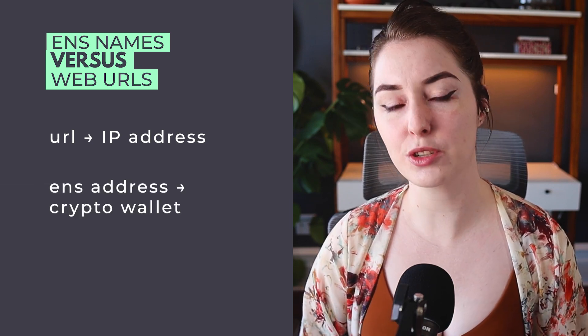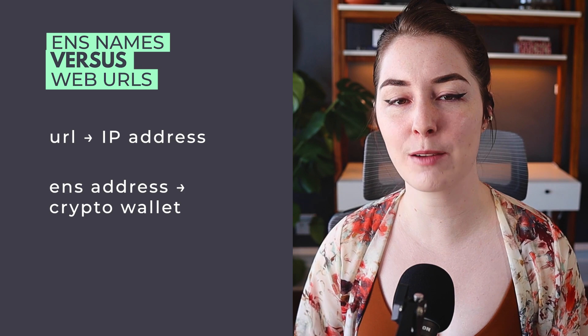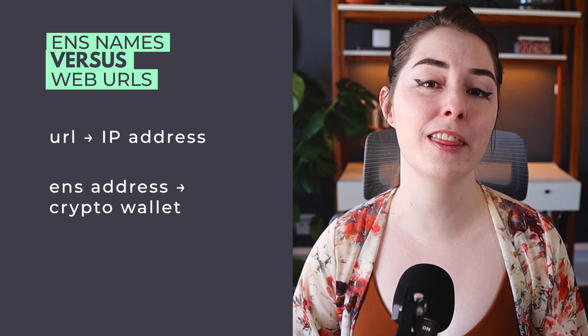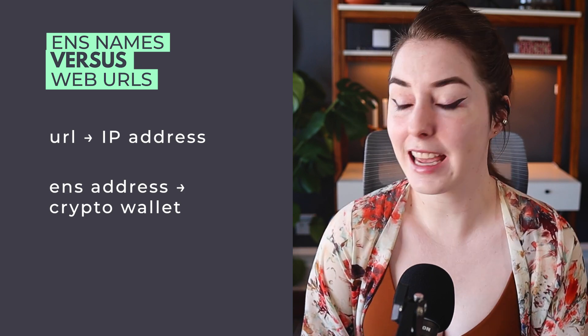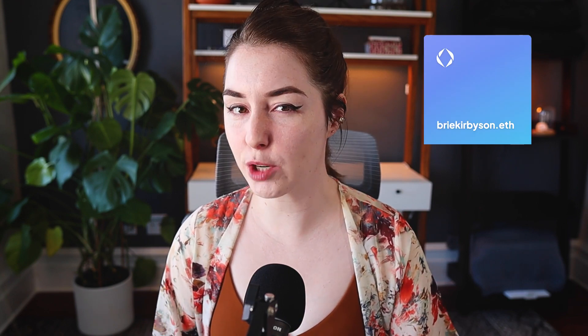ENS addresses, or your .eth name, function the same way, except it points to an Ethereum crypto wallet, like one you have with MetaMask. So what happens is you purchase your .eth name, you hold that in a wallet as an NFT, and then you can use that name instead of your regular wallet address when sending and receiving crypto. For example, I've purchased an ENS domain .eth and I'm holding that in a MetaMask wallet.